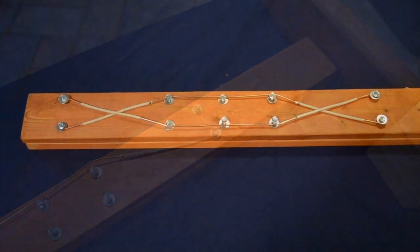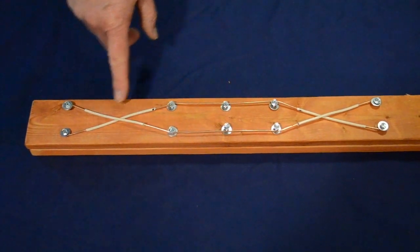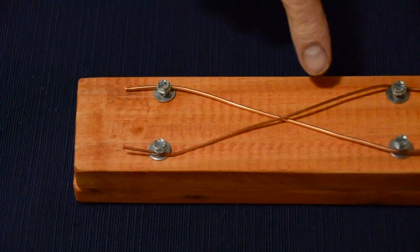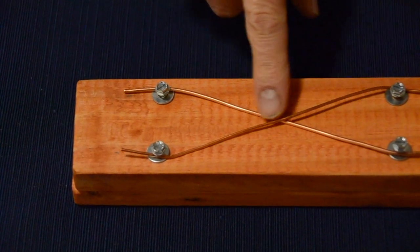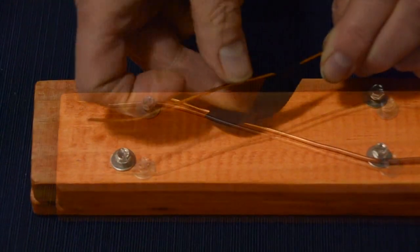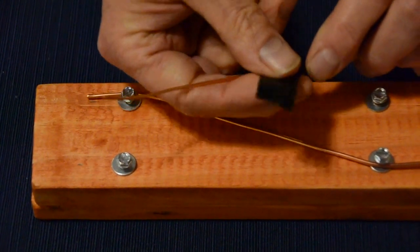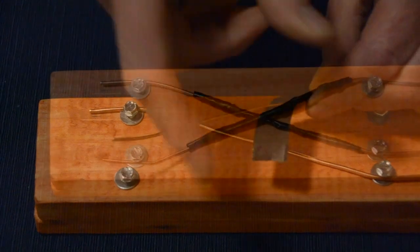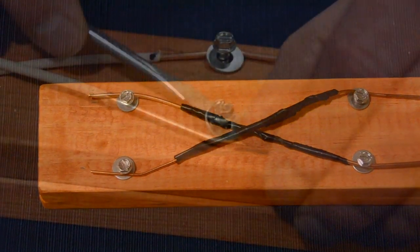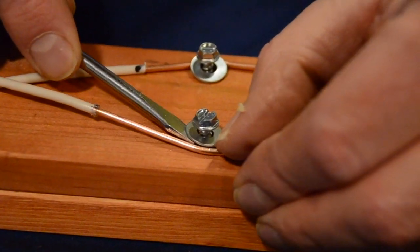The bare wire should contact each of the screws but should not make contact here or here. If you are using bare wire or coat hanger wire you can wrap electrical tape around the sections where the wires cross. This will keep the bare sections of wire from making contact with each other. Make sure all the bare wire is tucked neatly beneath the washers.